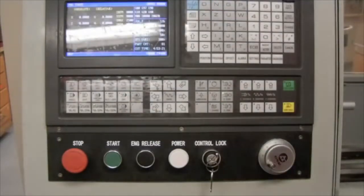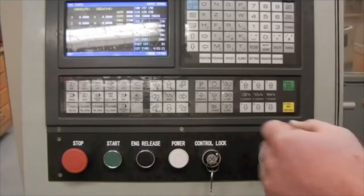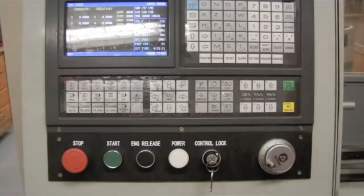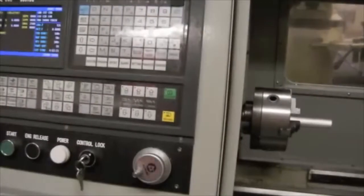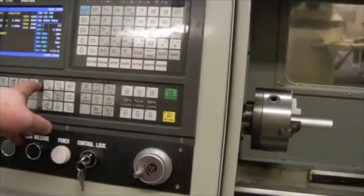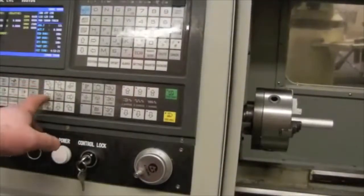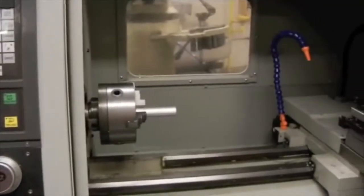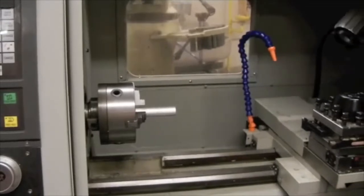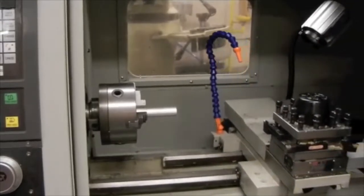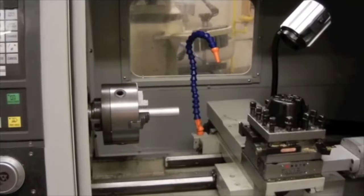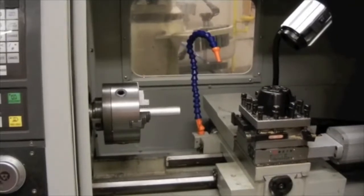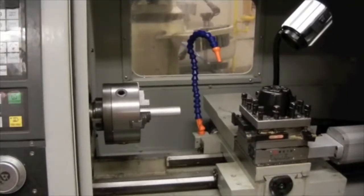I'm now going to move my tool carriage into position somewhere around my material. To do this, I press manual and now I can use the X and Z arrow keys to move my tool carriage. I want to make sure that I keep my tooling a safe distance away from the material.